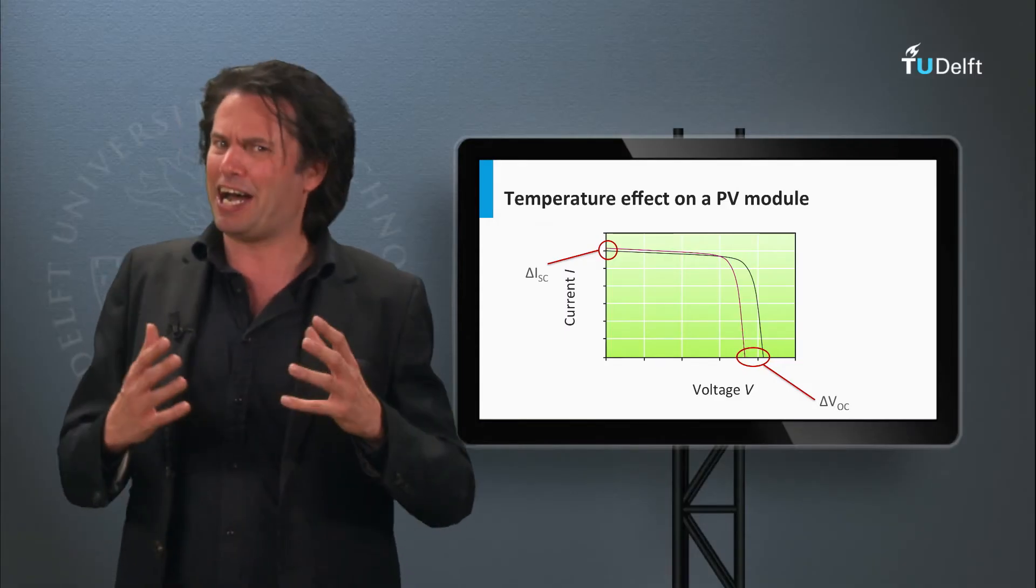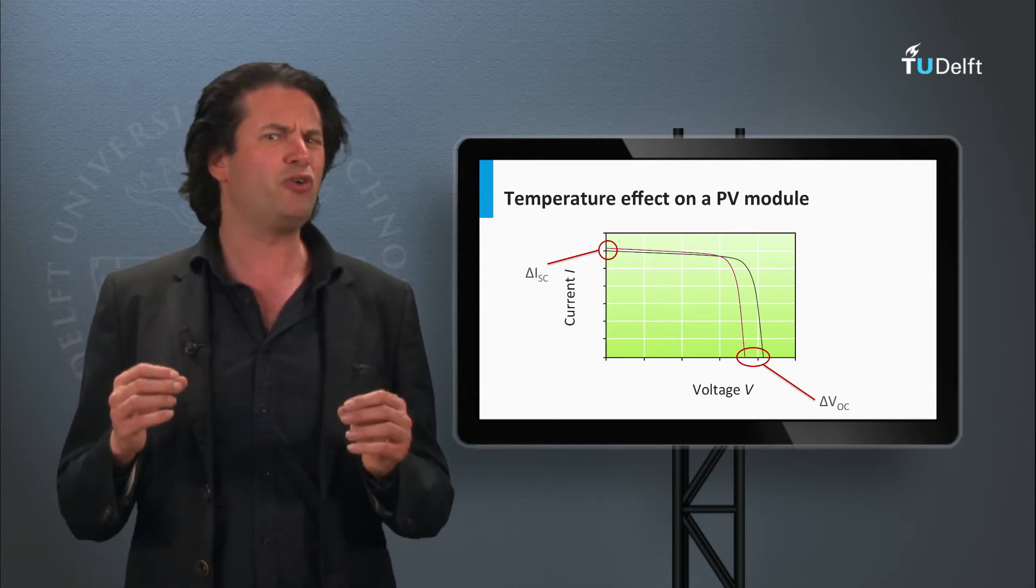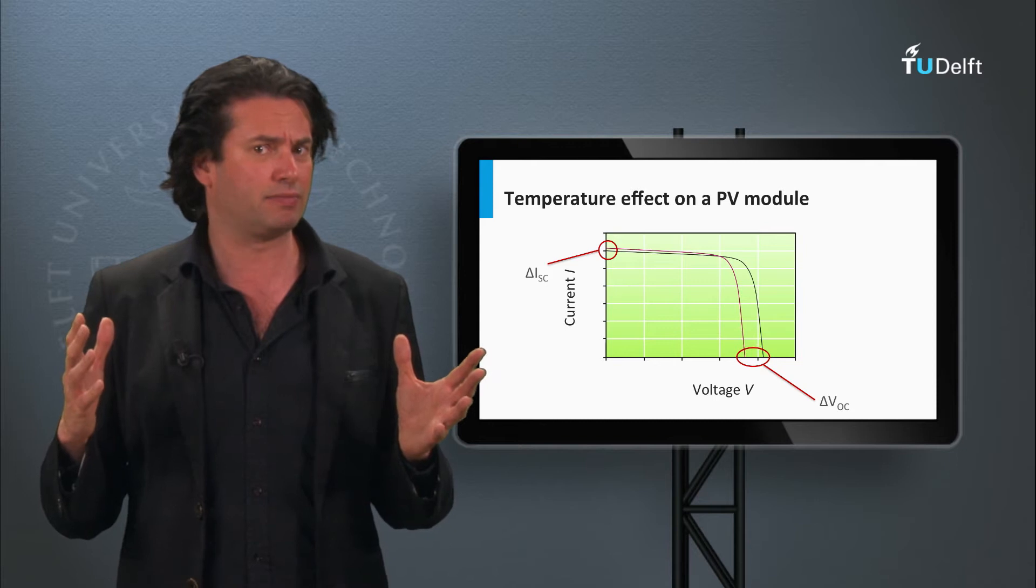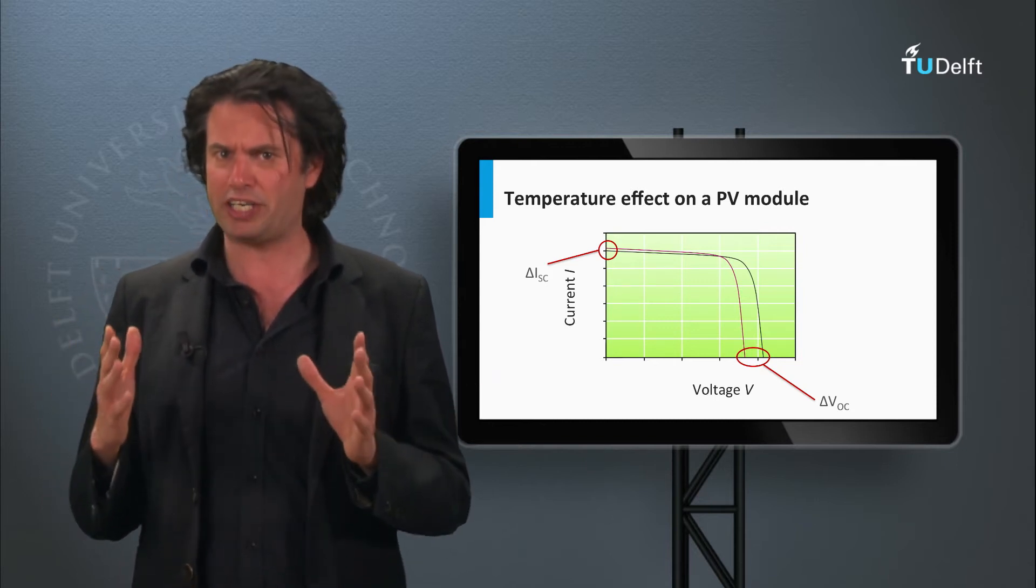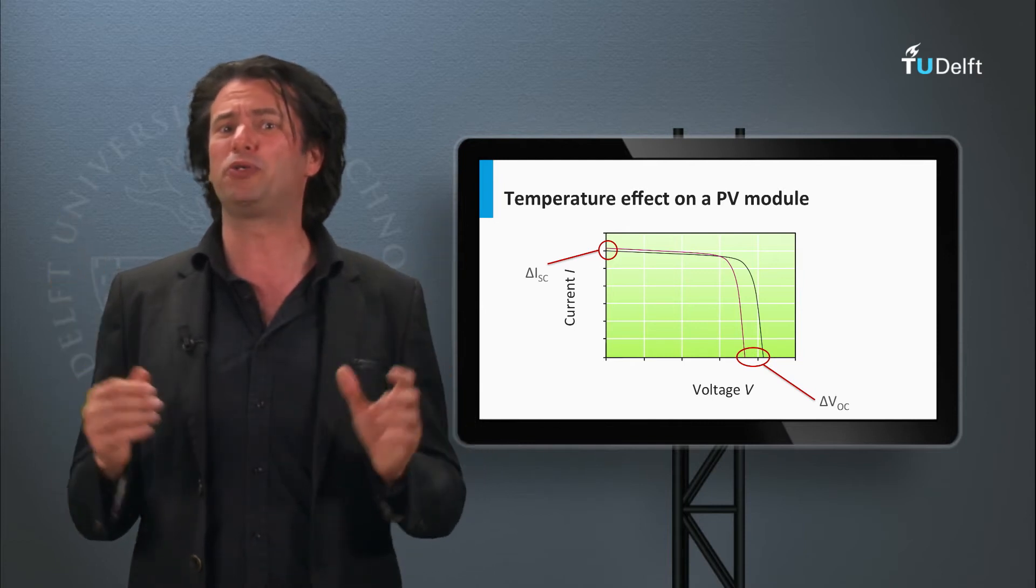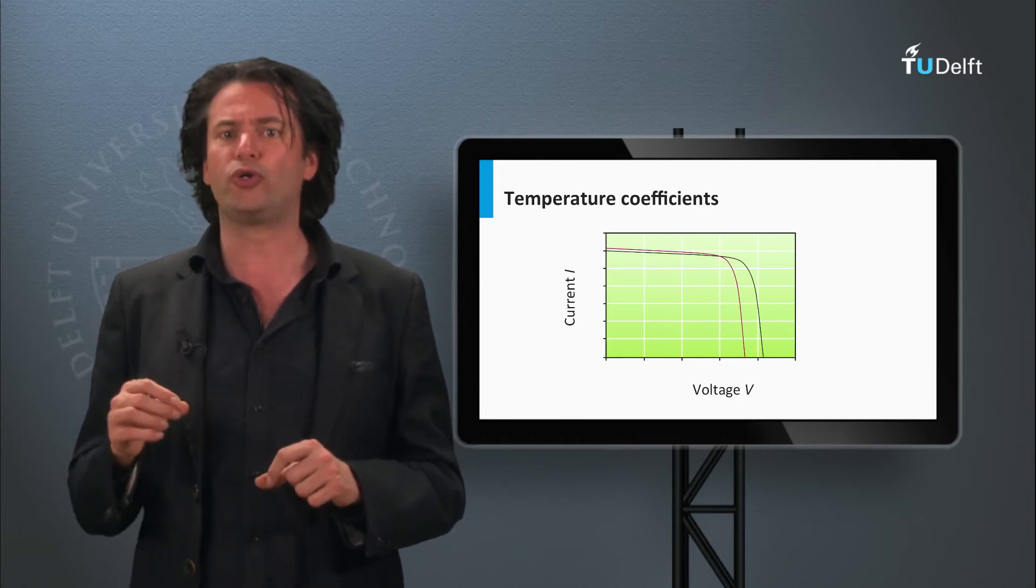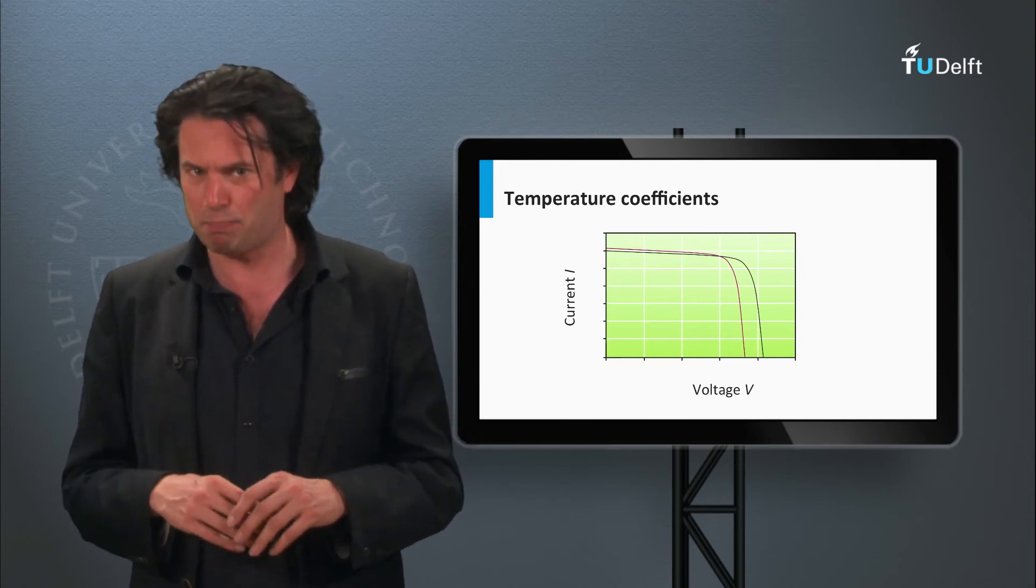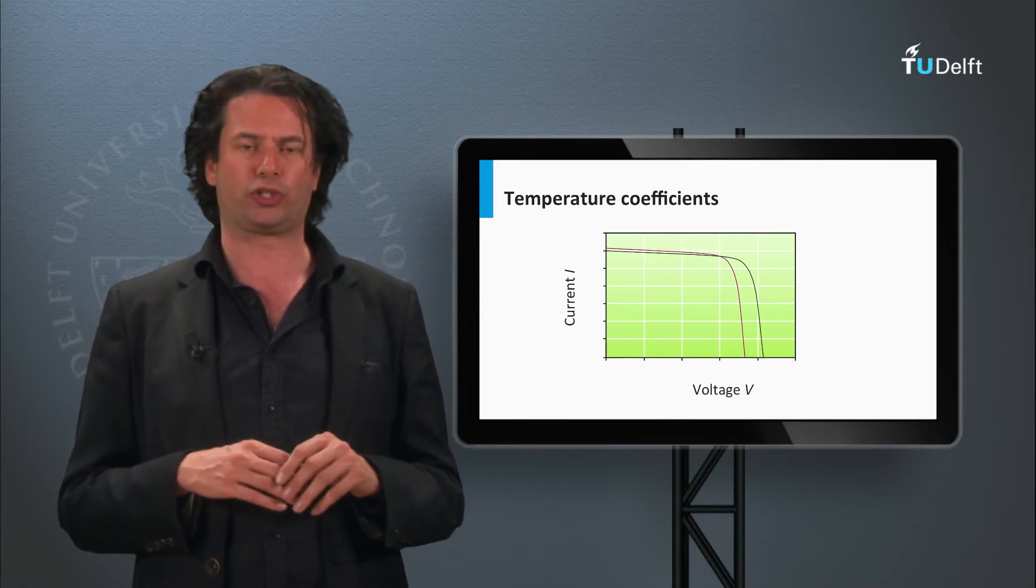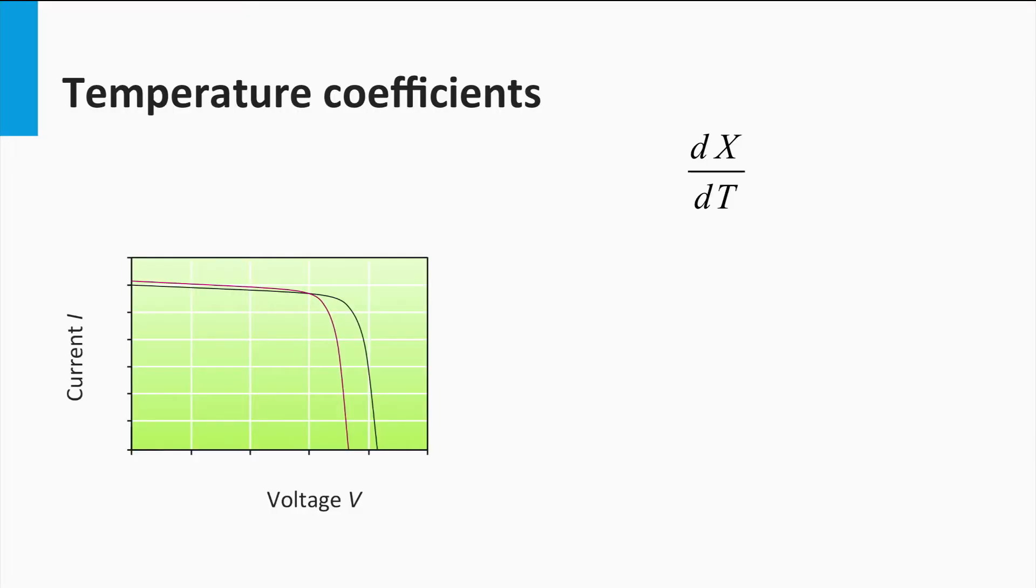So now you have an idea of the effect of temperature on the PV output. But how do we quantify this effect? If the temperature of the PV module were to increase by 10 degrees Celsius, how would the output be affected? Well, the PV module manufacturers include what are known as the temperature coefficients in the datasheets of the commercial modules.